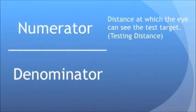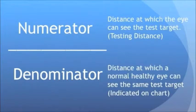The numerator, or the number at the top, refers to the distance at which the tested eye can see the test target. In practice, this will be the same as the testing distance. The denominator, or the number at the bottom, refers to the distance at which a normal healthy eye can see the same test target. This value is indicated on the test chart.